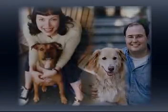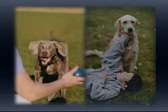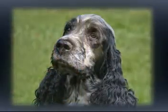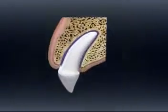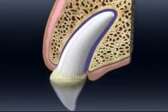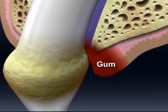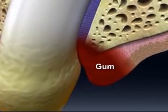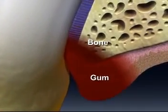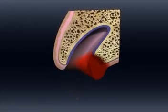By three years of age, it's estimated that four out of five dogs have periodontal disease. What begins as a reversible gingivitis can progress to recession of the gums and may lead to permanent loss of gum and periodontal bone, gradual loss of tooth attachment, and potential loss of the tooth itself.